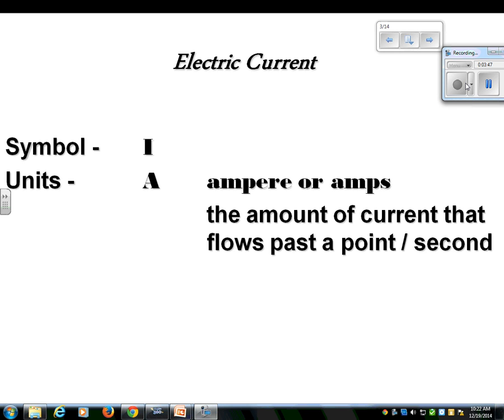I think I found a mistake in my notes. How can I say that current is the amount of current that flows past a point per second? How can I use the word in the definition? It's the amount of charge. I'm going to blame that on Mr. Dick because this is his PowerPoint that I borrowed from him. The amount of charge that flows past a point per second.